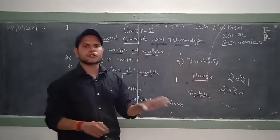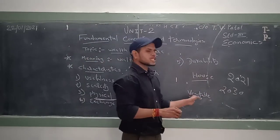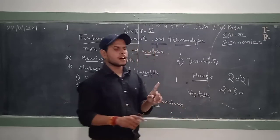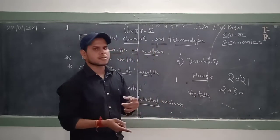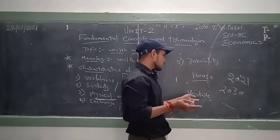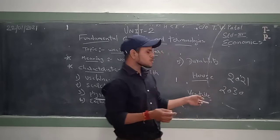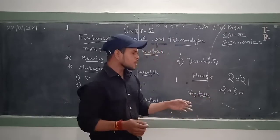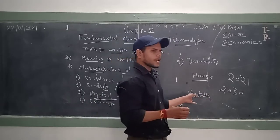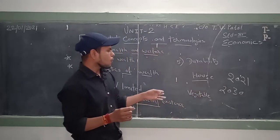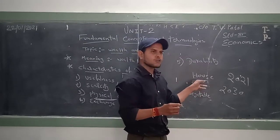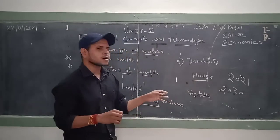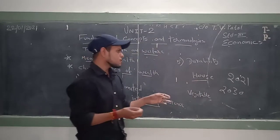On the other hand, vegetables — after keeping them four to five days, for example tomatoes, you cannot exchange them for money with other people because vegetables and dairy products are not having any exchange value. Whereas land, house, and machineries all have exchange value.